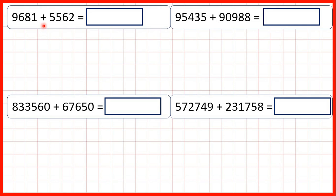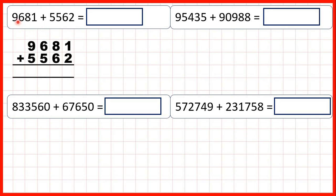Now we need to add using column addition. First we have 9,681 plus 5,562. We start by adding the smallest place values first, so we start on the right. 1 plus 2 is 3.